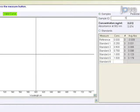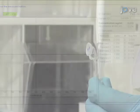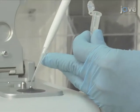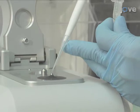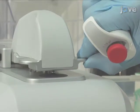Enter the sample ID. Load 2 µL of sample onto the lower pedestal and click Measure. A fresh 2 µL aliquot of sample should be used for each measurement.